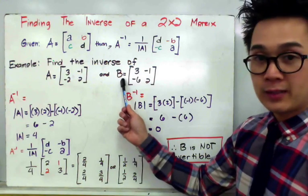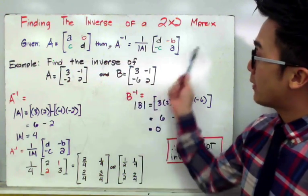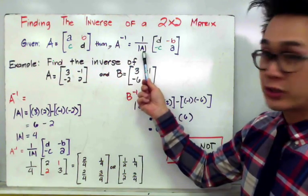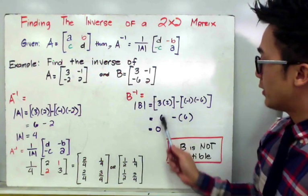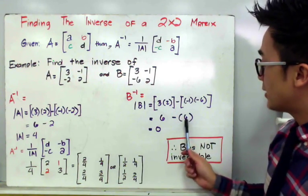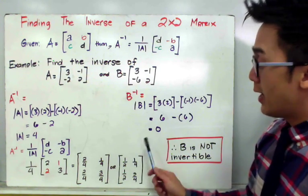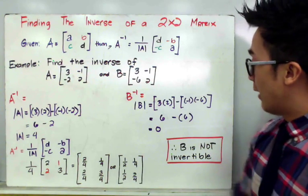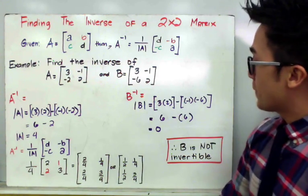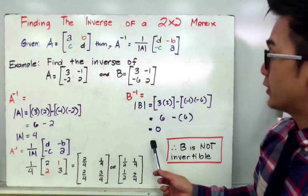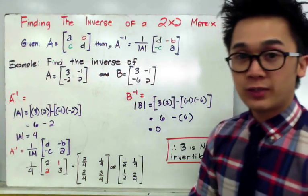Moving on to matrix B, we use the same formula to find its inverse. Finding the determinant: 3 times 2 is 6, and negative 1 times negative 6 is positive 6. So 6 minus 6 gives a determinant of 0. If the determinant is 0, the matrix is not invertible. Therefore, we cannot find the inverse of matrix B because its determinant equals 0.